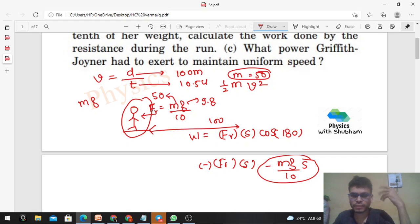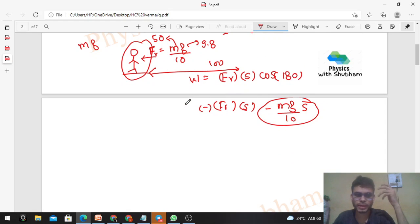You can substitute the values and find out the numerical value for this work done. Option C ki baat karte hain. What power Griffith Joyner had to exert to maintain uniform speed? Dekho, ek uniform speed maintain karne ke liye kitna power apply karne padega? Dekho, ek force lag raha hai, resistive force Fr, which we have already calculated, mg by 10. Now if this athlete has to move with a constant speed, then the net force on the athlete should be zero.